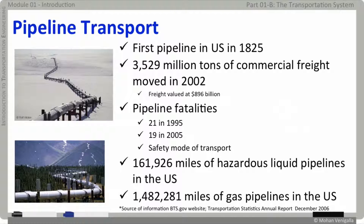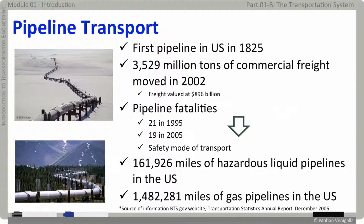When we talk about transportation we barely think about pipelines because they don't transport people, but pipeline is one of the key elements of transportation, especially for trade. Nearly 3,500 million tons of commercial freight moved by pipeline in 2002. Pipeline fatalities refer to surface accidents. There are about 162,000 miles of hazardous liquid pipelines for gasoline and crude oil, and nearly 1.5 million miles of gas pipelines in the US.